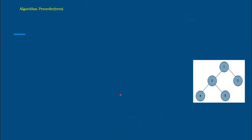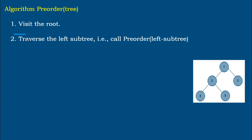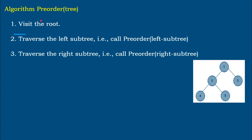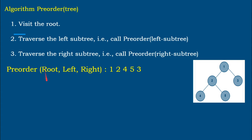The next type is pre-order traversal. As the name implies, visit the node first, then traverse the left subtree, and then traverse the right subtree. The root is in the 'pre' position — that is, it is visited first. With the example tree, the order is root, left, right — so first come to the root, write the value, then go down to the left.